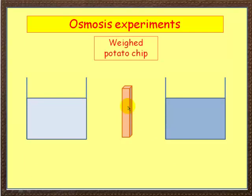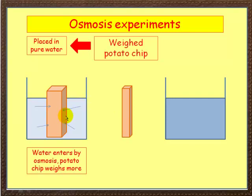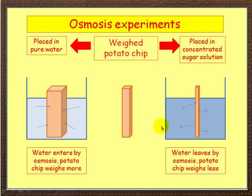Let's see an experiment you may have done involving potato chips. We've put a potato chip into pure water — the water concentration outside the chip is higher than inside the chip, therefore water enters by osmosis and the potato chip gains weight. Now if you put it into a very strong sugar solution, there's more water inside the chip than outside, therefore water will leave by osmosis through the membrane, and your potato chip will actually lose mass.